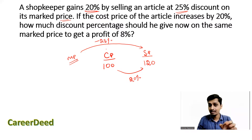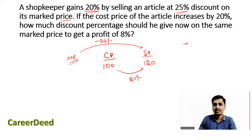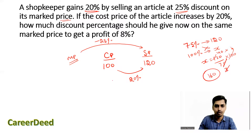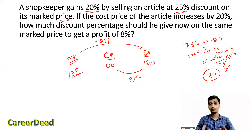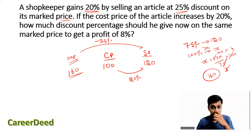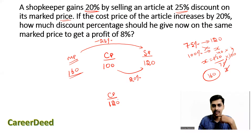So 75% of market price = 120. Cross-multiplying: market price = 120/75 × 100 = 160 rupees. The shopkeeper bought at 100, marked at 160, gave 25% discount, and sold at 120 for 20% profit. Now the cost price increases by 20%, so new cost price = 120 rupees. The market price stays at 160. To get 8% profit on the new cost price of 120.